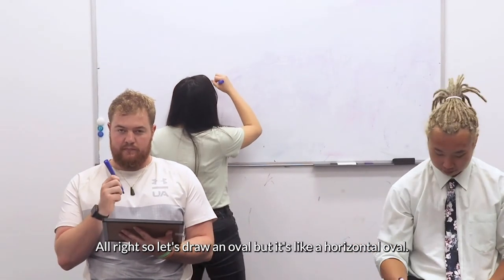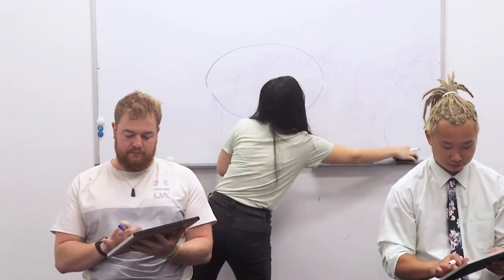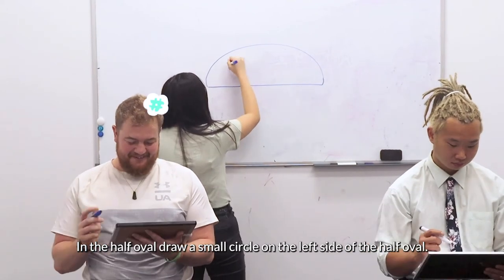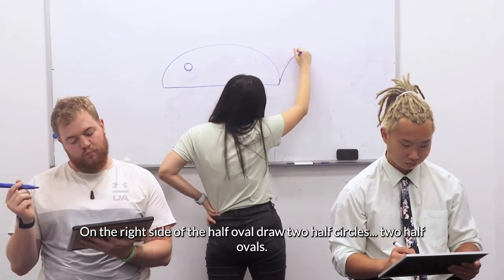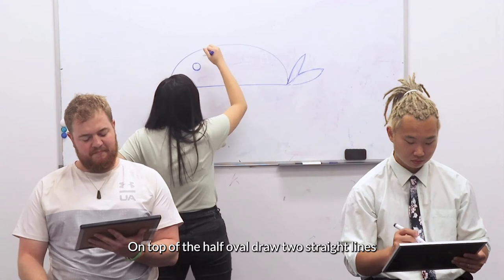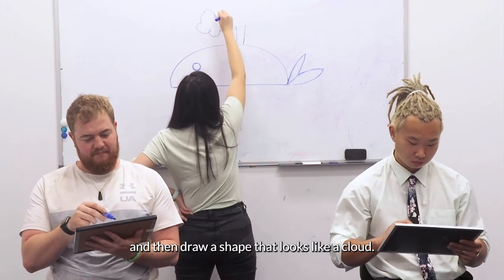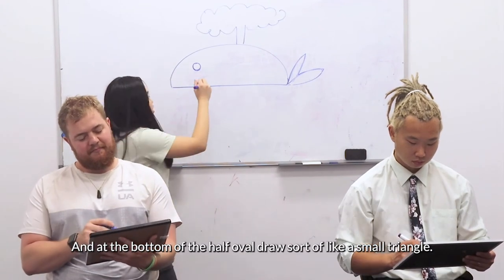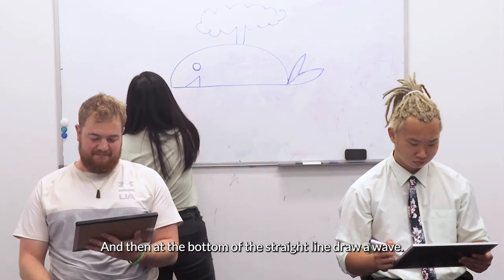Let's draw an oval — a horizontal oval. Then rub off the bottom part and draw a line on it. In the half-oval, draw a small circle on the left side. On the right side of the half-oval, draw two half-circles — two half-ovals. On top of the half-oval, draw two straight lines, and then draw a shape that looks like a cloud. At the bottom of the half-oval, draw sort of a small triangular shape. And then at the bottom of the straight line, draw a wave.